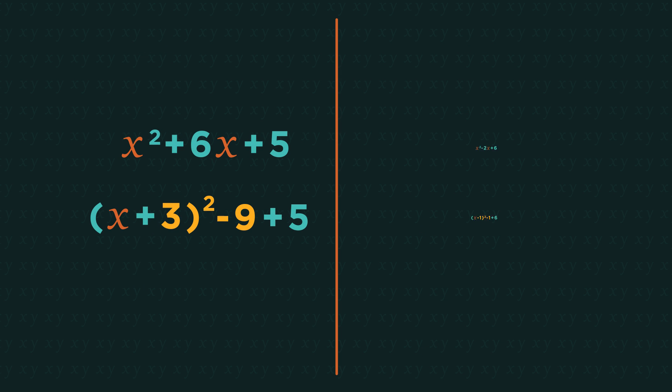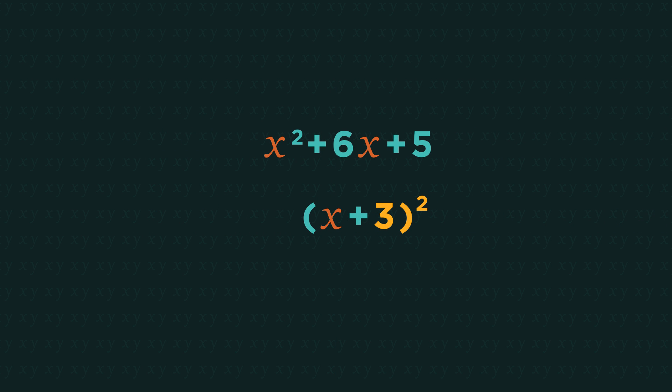But why do we subtract the square of the bracket number? Think of expanding brackets. So let's go back one step to this and expand the x plus 3 squared. We get x squared plus 6x plus 9. We don't want the plus 9. We just want plus 5. So to balance it out, we need to subtract 9. Which is why we always subtract the square of the number in the bracket.